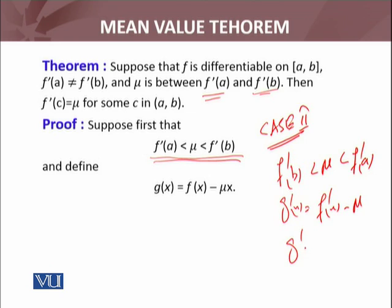My goal is to show that there exists a number c in the open interval (a, b) such that g'(c) equals zero. In other words, I will show that the g function I constructed has local extrema at some point inside the interval (a, b).